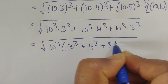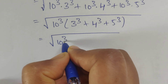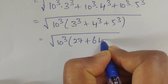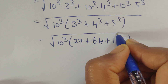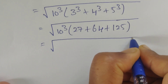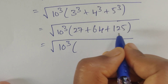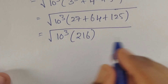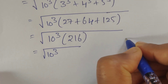After factoring, the leftover terms are 3³ + 4³ + 5³. Now 3³ = 27, 4³ = 64, and 5³ = 125, giving us the square root of 10³ times (27 + 64 + 125).